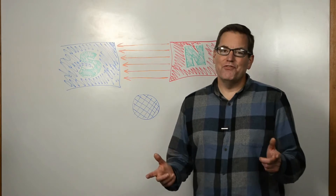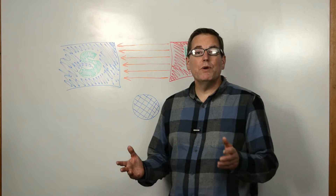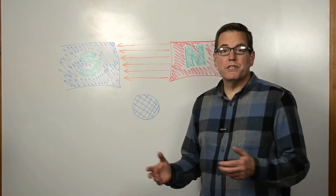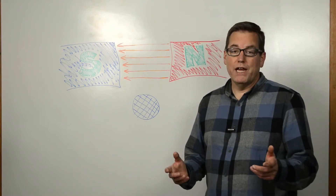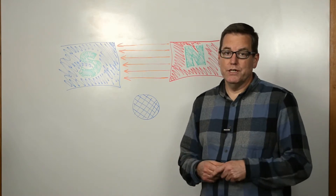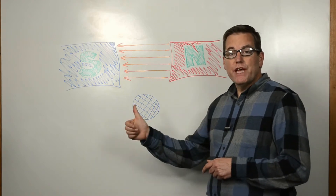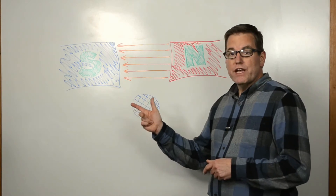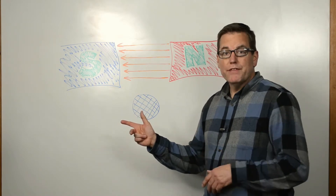Now we're going to study Fleming's right-hand rule. We apply this whenever we bring a conductor into a magnetic field for the express purpose of inducing a current in that conductor — we can use Fleming's right-hand rule to determine the direction of the current. We are talking about conventional current here. What Fleming discovered is if you take your right hand and put your thumb, first finger, and second finger mutually perpendicular to one another, you can apply this rule.